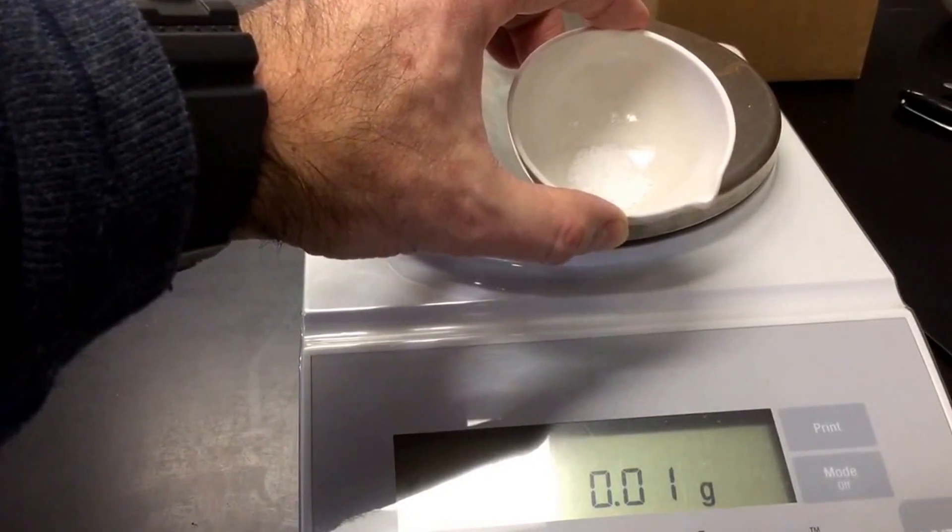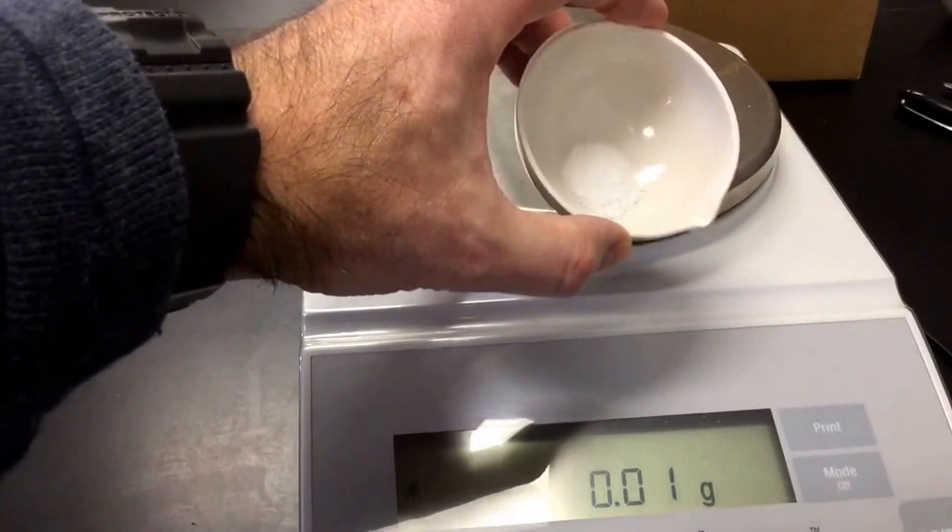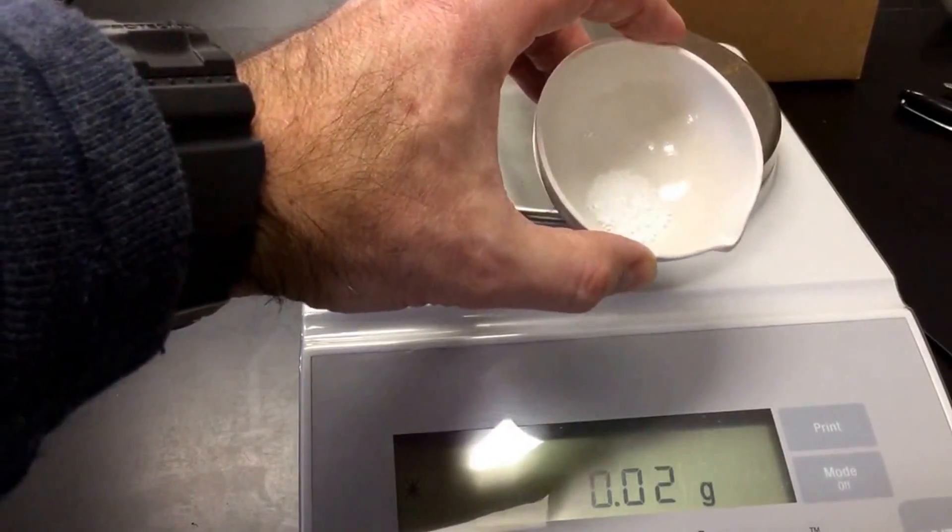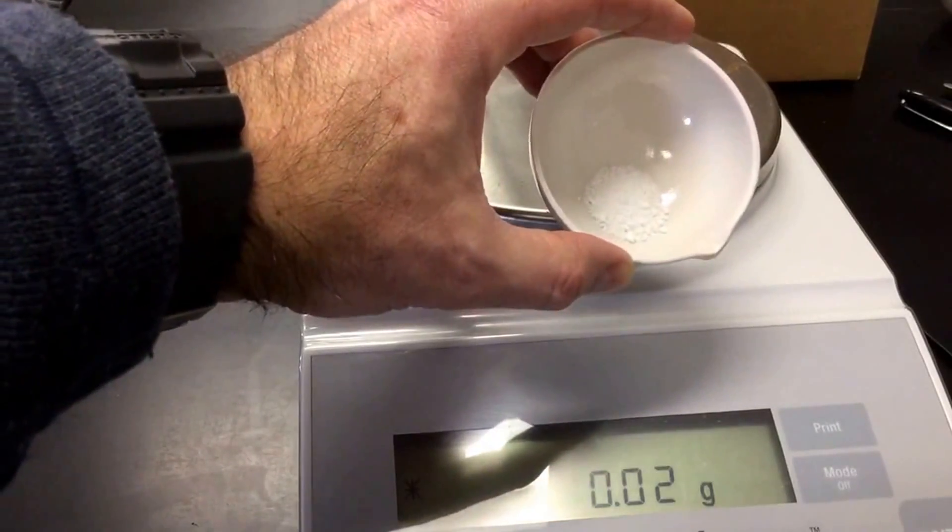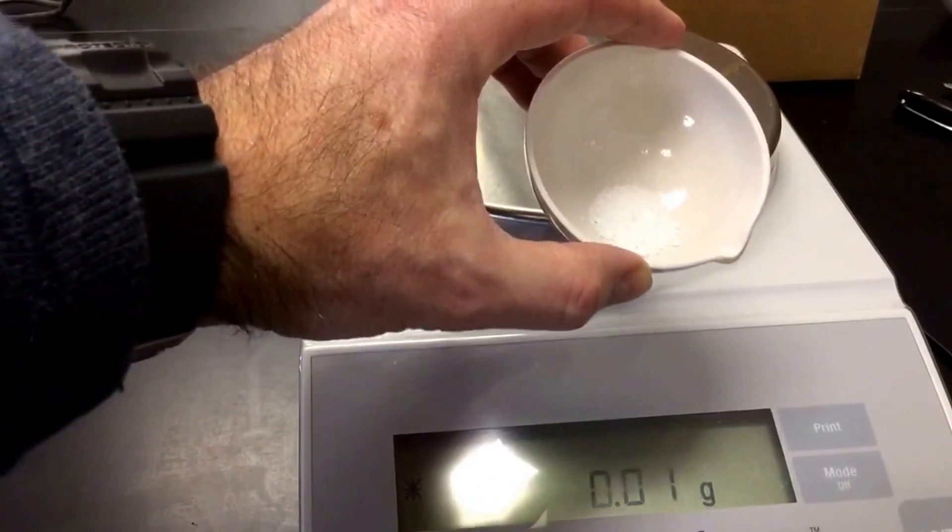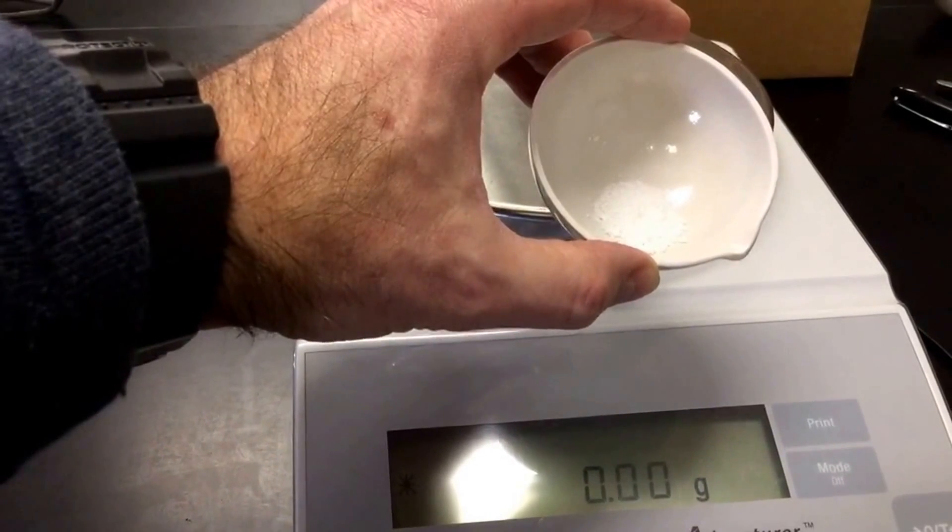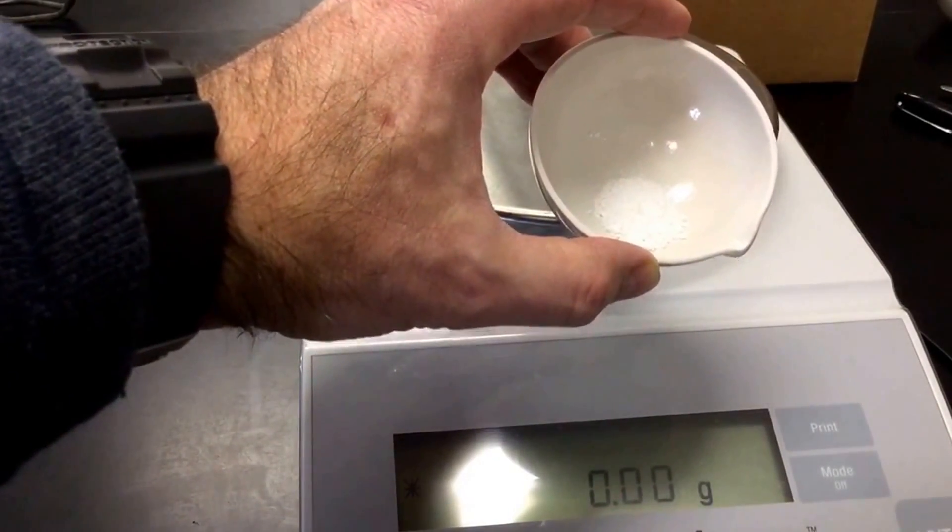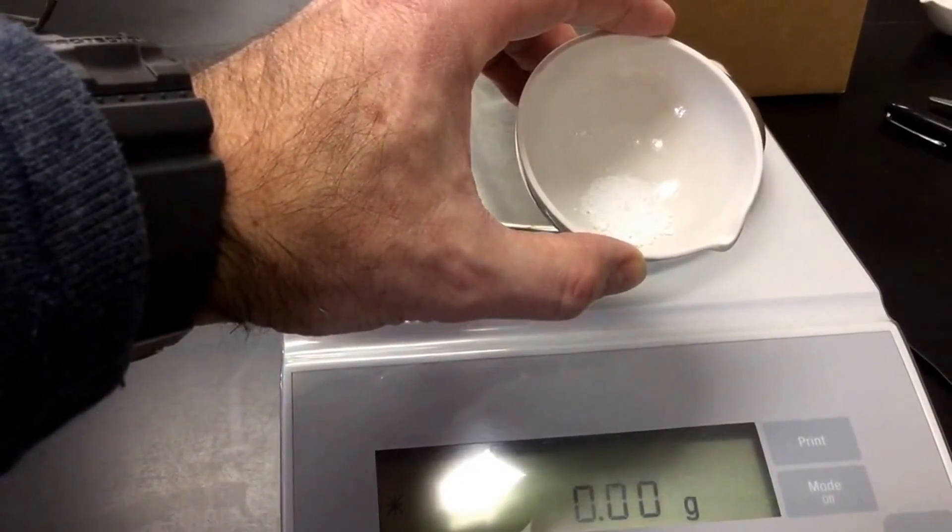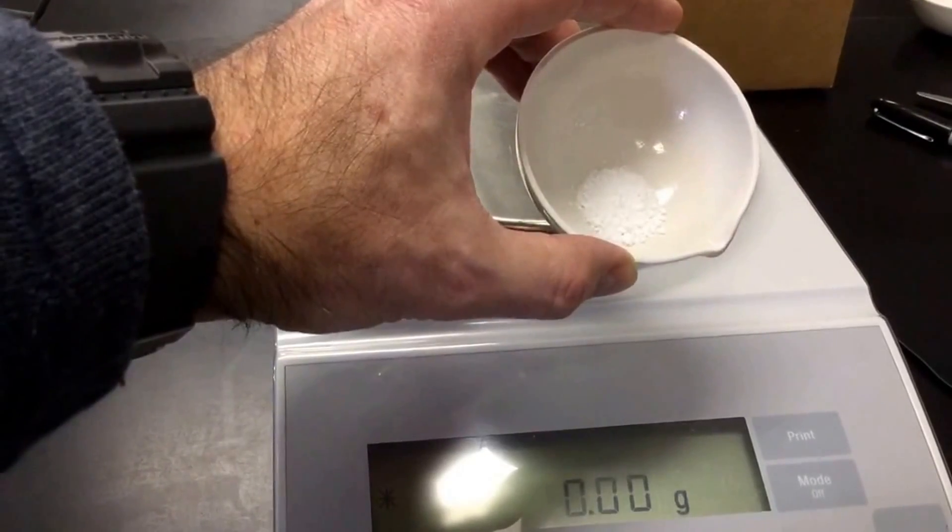Next step we're going to do is we're going to heat this up on a Bunsen burner. And something that you're going to want to take note of is the texture of the magnesium sulfate. And even though it doesn't look like it right now, there's actually water in that solid. So the next thing we're going to do is heat this up on a Bunsen burner and try to burn away all that solid.